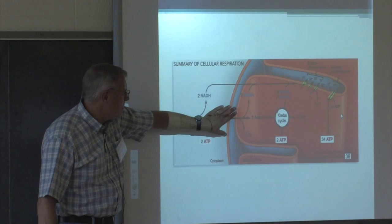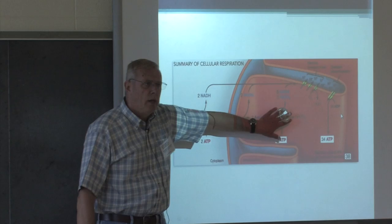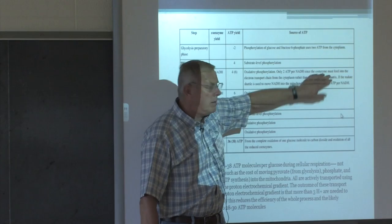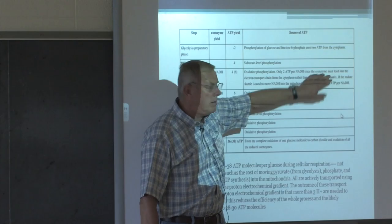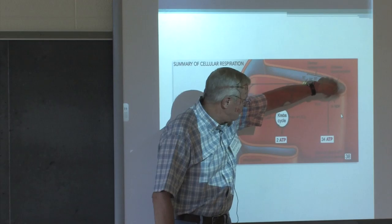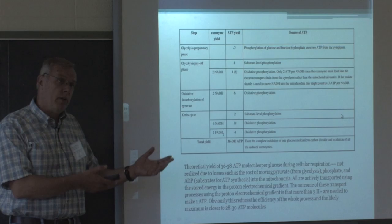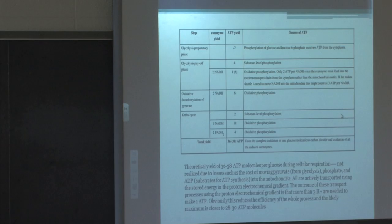In summary: glucose goes to pyruvate; pyruvate is converted to acetyl-CoA and enters the Krebs cycle; the Krebs cycle tears the molecule apart and harvests electrons; those electron shuttles go to the electron transport system, activate proton pumps that establish a concentration of hydrogen ions in the intermembrane space; and the ATP synthase allows the protons back across and harvests ATP — about 38 ATP per glucose. Compare glycolysis at 2 ATP to this at 38, that's 19 times more. No wonder your cells prefer aerobic respiration.